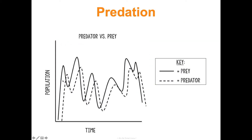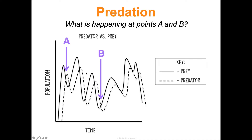Look at this graph showing how a population of predators, shown by the dotted line, and prey changes over time. At point A, the prey population is decreasing as the predator population is increasing — that makes sense. At point B, the predator population has been going down because they've run out of prey, and as the predator population decreases, the prey is then able to increase. These two populations are able to regulate each other, which is pretty cool.